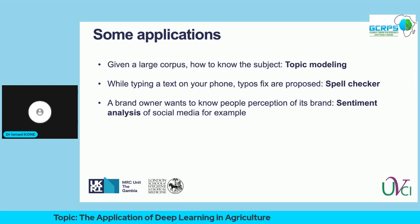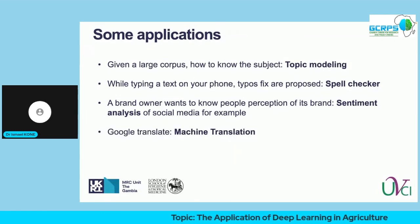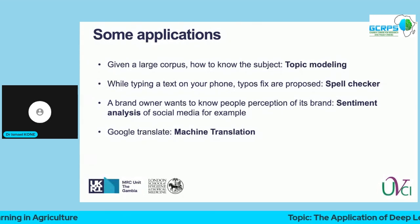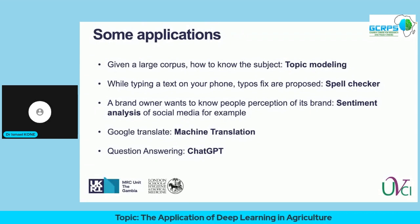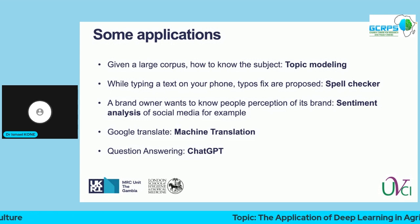We also have machine translation — the famous Google Translate. We'll see how Google Translate evolved through time when they added a neural network and how it improved. We also have question answering, with the famous example of ChatGPT, which is making waves everywhere in the world right now.